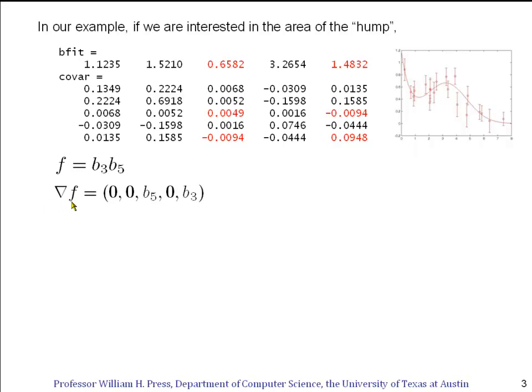So let's compute. We first compute the gradient vector. So we take the partial derivative of f respectively with respect to b1, b2, b3, b4, b5. b1, b2, and b4 just give 0 because they don't occur here. The partial derivative with respect to b3 is b5. The partial derivative with respect to b5 is b3.